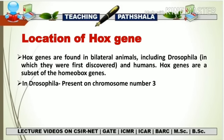Hox genes are found in bilateral animals, including Drosophila, where they were first discovered. They are also present in mouse and human. In Drosophila, Hox genes are a subset of homeobox genes and are located on chromosome number 3. In this video we will focus only on Drosophila Hox genes.